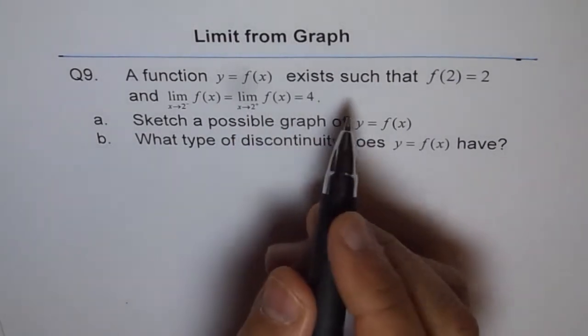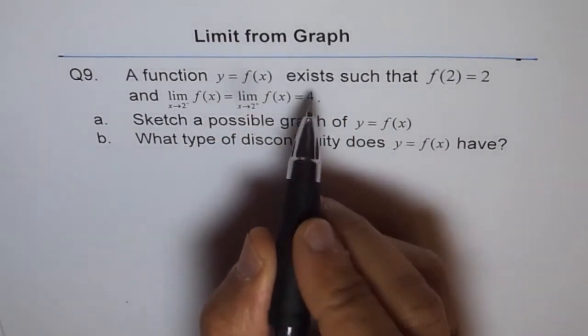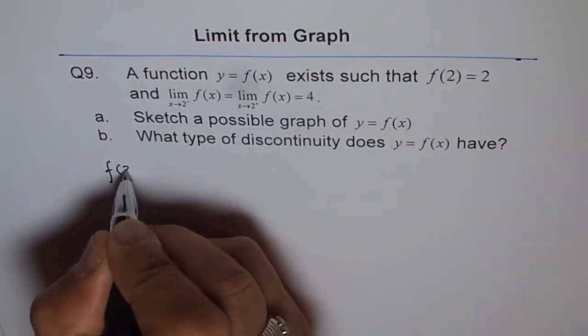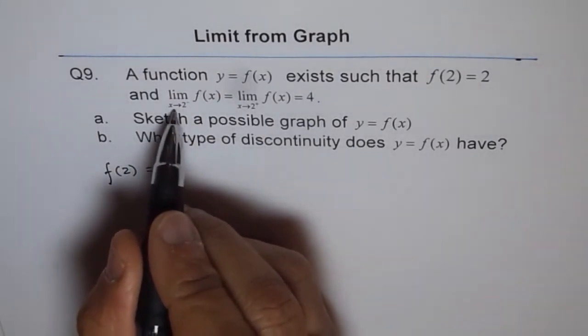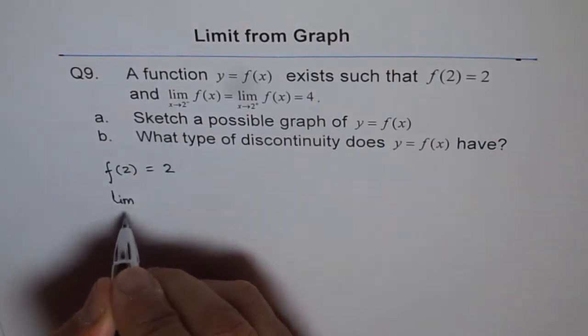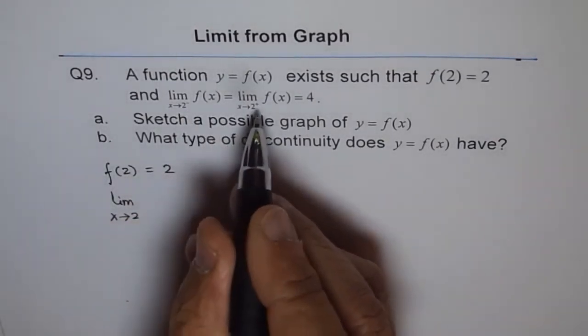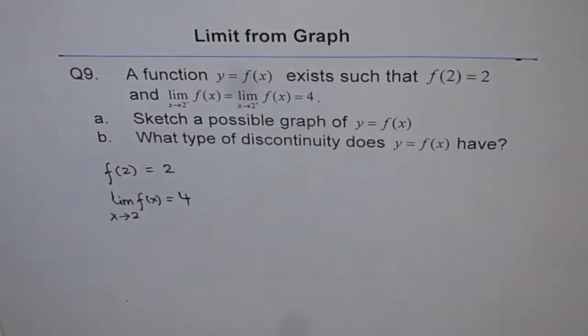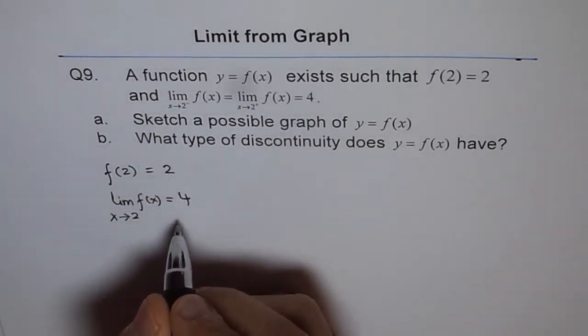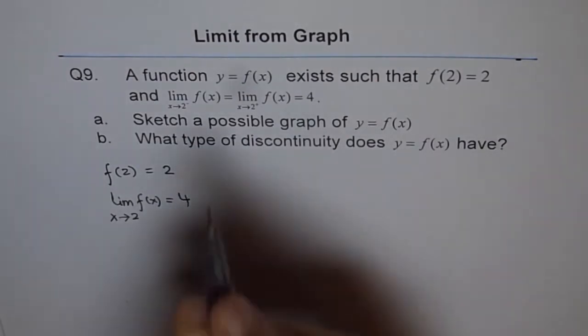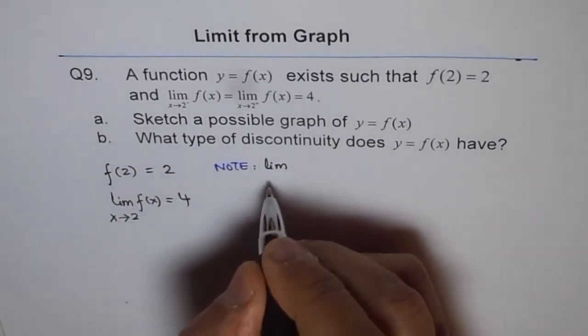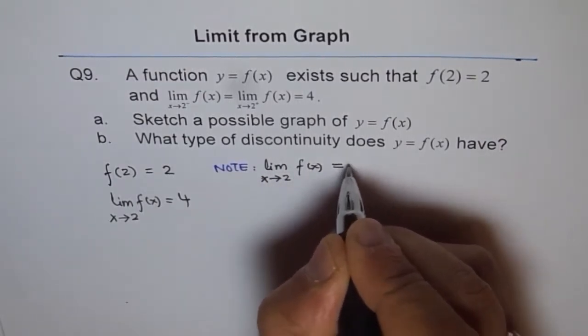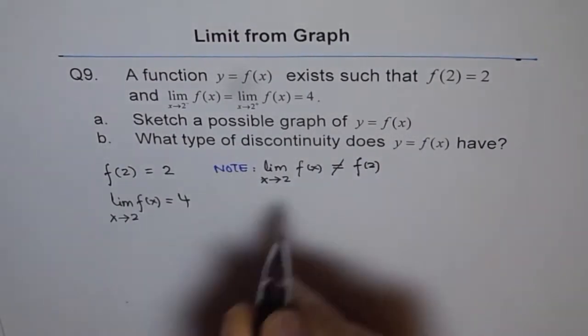So the information given to us is kind of like this. One is that the function y equals f of x exists such that f of 2 is 2. That means the value at 2, the value of the function is 2. So one, f of 2 is 2. Second, limit of the function as x approaches 2 is 4 from both the sides. So second is limit when x approaches 2, whether from negative side or from positive side, for the function is actually 4. So limit also exists. But what we note here is that the limit is not equal to value of the function.